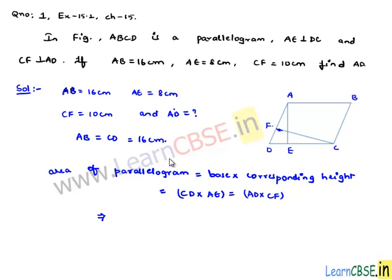Area of parallelogram, that is CD times AE equals AD times CF. Substituting the values, 16 times 8 equals AD times 10, which implies AD is equal to 16 times 8 divided by 10, which equals 128 divided by 10, which is equal to 12.8 cm.